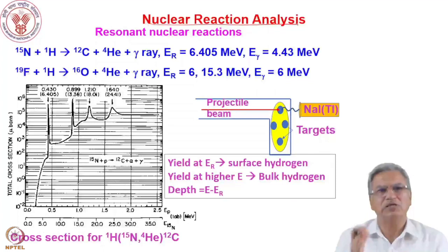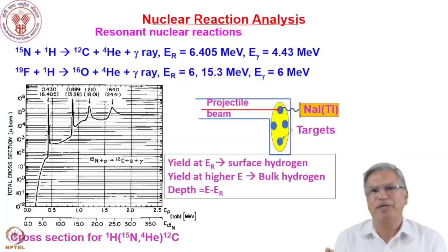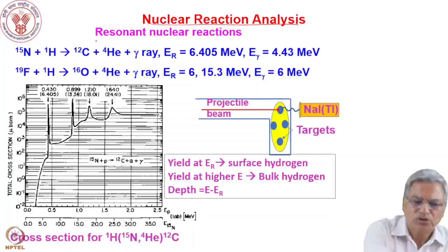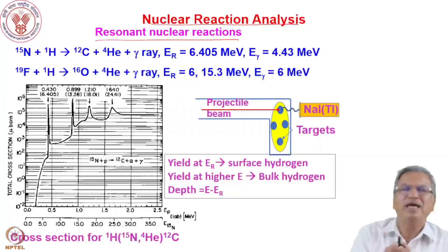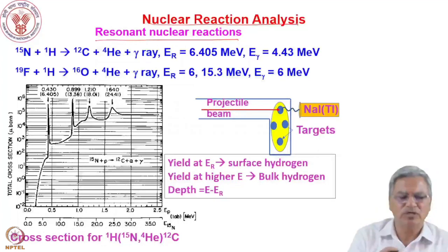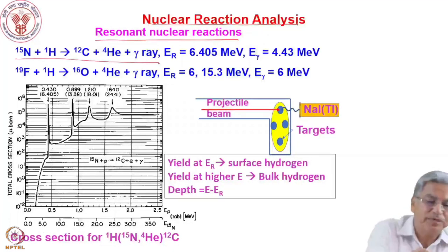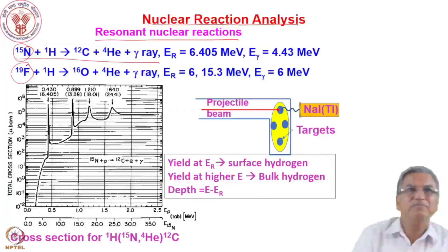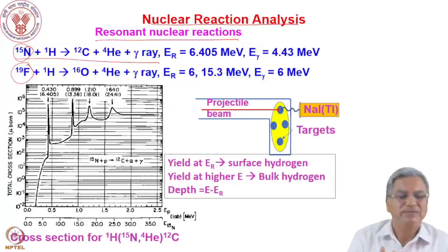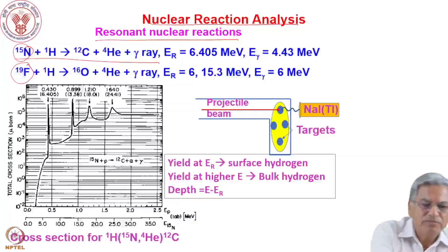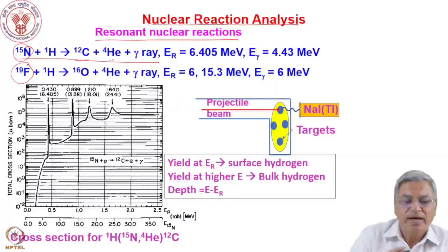Techniques where there is an enhancement in the cross-section at a particular projectile energy — a resonance — are termed NRA, as historically used. The two most commonly used nuclear reactions are with projectile nitrogen-15 and projectile fluorine-19, where the proton is actually the target. Here nitrogen-15 or fluorine-19 is the projectile, and we want to study hydrogen in the material. The reaction is: nitrogen-15 plus proton gives carbon-12 plus helium plus a gamma ray.